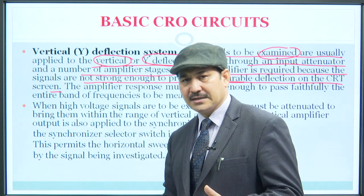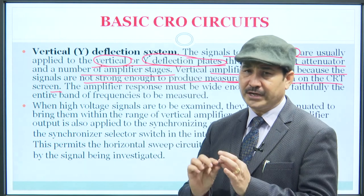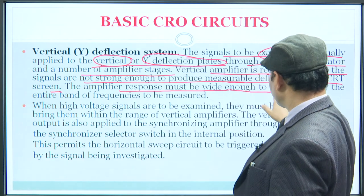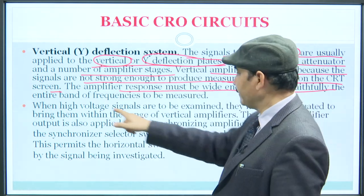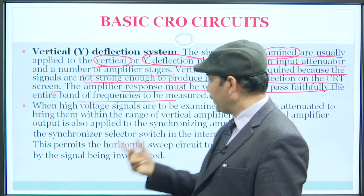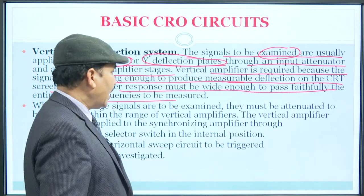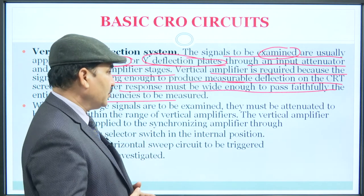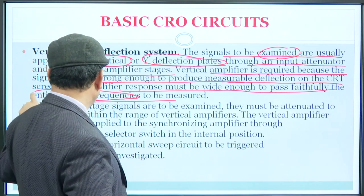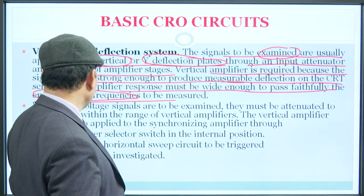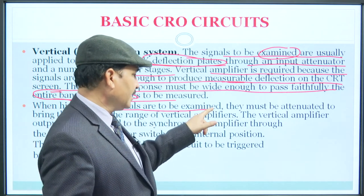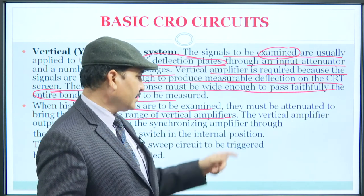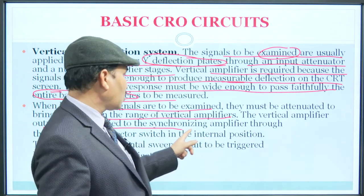If the signal is very large, it will primarily be attenuated; if required, amplification can also follow. The amplifier's response should be wide enough to faithfully pass the entire band of frequency to be measured. When high voltage signals are to be examined, they must first be attenuated to bring them within the range of the vertical amplifier. The vertical amplifier output is also applied to the synchronizing amplifier.